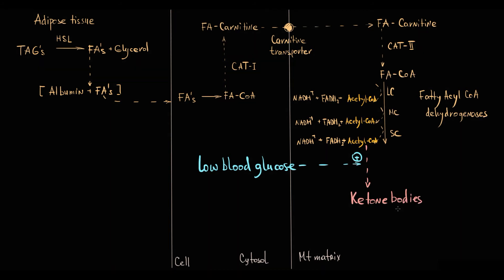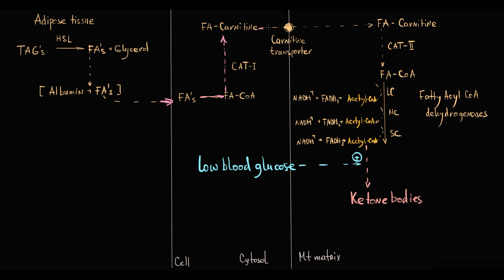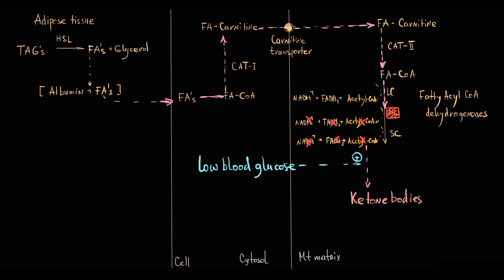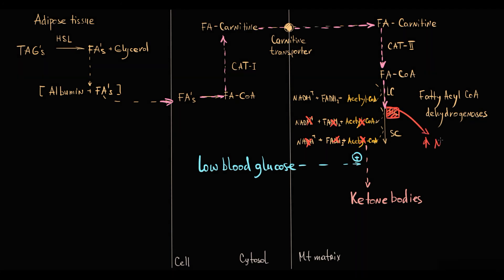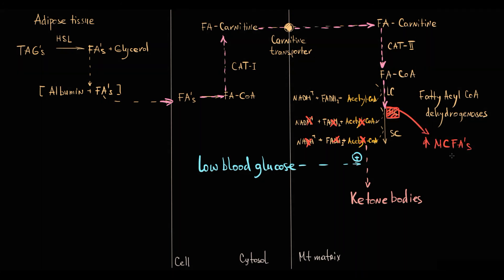So to provide ketone bodies production, mitochondria begin massive uptake of long-chain fatty acids, that because of medium-chain acyl-CoA dehydrogenase deficiency can be degraded only to a medium-chain.